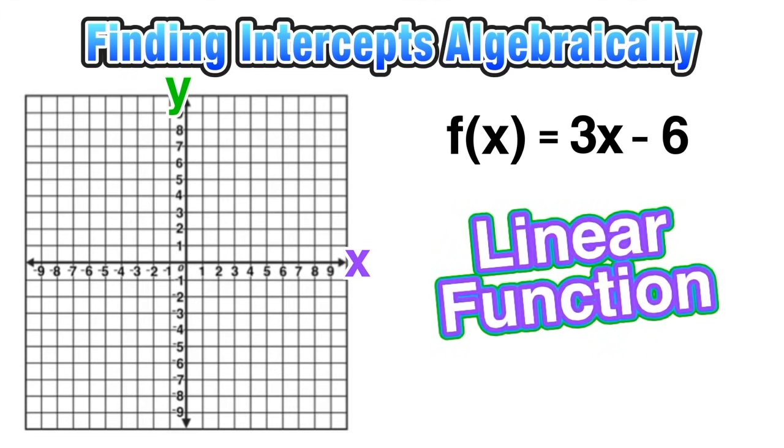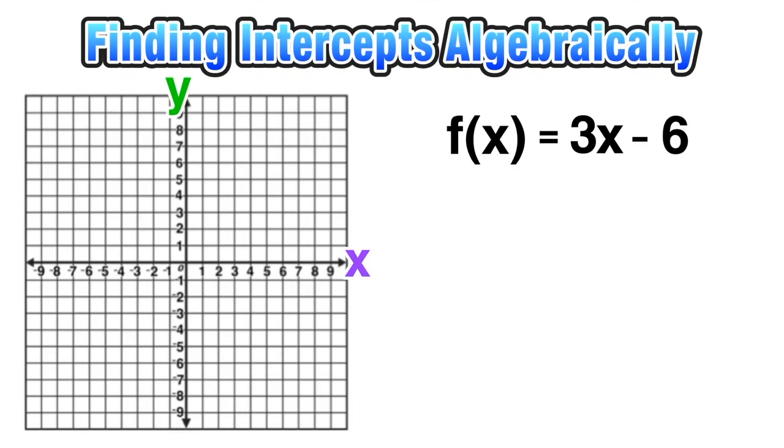Now let's extend this understanding to finding the intercepts of a linear function. In this case, f(x) = 3x - 6. We can replace f(x) with y equals—they both mean the same thing. This will make it easier to work with here.